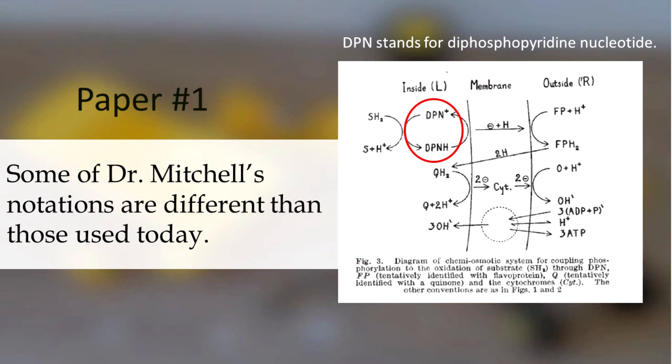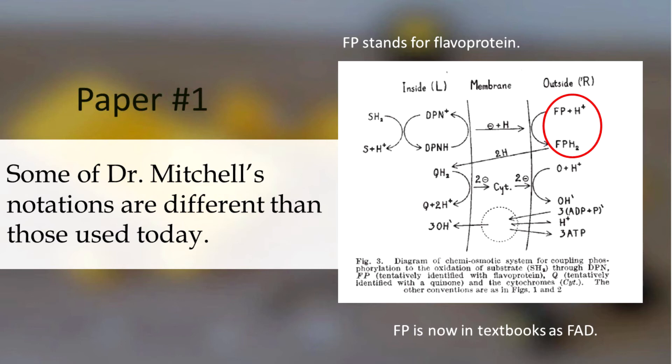DPN stands for diphosphopyridine nucleotide. We would now call that particular molecule nicotinamide adenine dinucleotide, or NAD. FP stands for flavoprotein. Your textbook will call this molecule flavin adenine dinucleotide, or FAD.